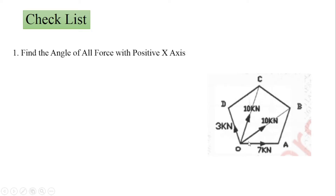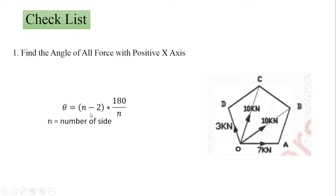To calculate the angles, we need to know the included angle of this pentagon. For any polygon, the included angle can be calculated using the formula: theta equals (n minus 2) times 180, divided by n, where n is the number of sides. For a pentagon, n equals 5, so it becomes (5 minus 2) times 180 divided by 5.